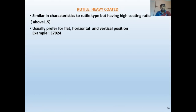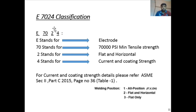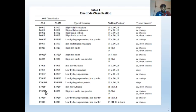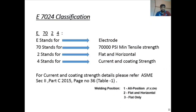Rutile heavy coated electrodes are similar to rutile but with a higher coating ratio — above 1.5. These are preferred for flat, horizontal, and vertical positions. Example: E7024. For E7024: '70' = 70,000 psi, '2' = flat and horizontal, '4' = current and coating type. For the meaning of '4', refer to ASME Section II Part C 2015, page 36.